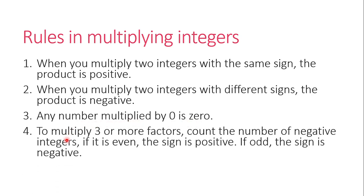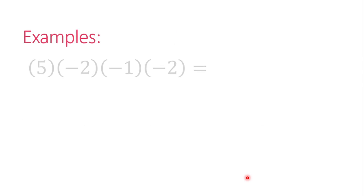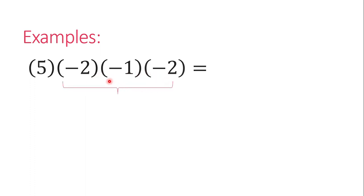We also have the fourth rule. When we are to multiply three or more factors, we need to count the number of negative integers. If it is even, the sign is positive. However, if it is odd, the sign is negative. For example, 5 times negative 2 times negative 1 times negative 2 — we count the negatives: 1, 2, 3. Since 3 is an odd number, the sign should be negative. The product is negative 20.